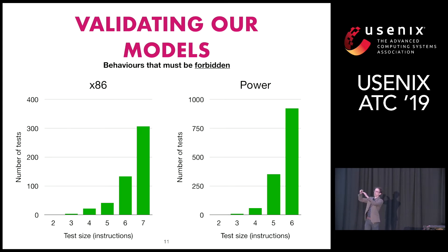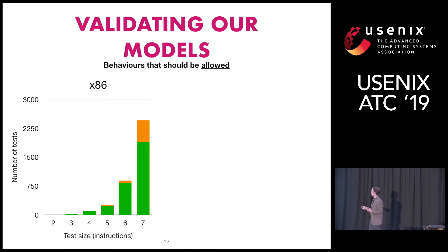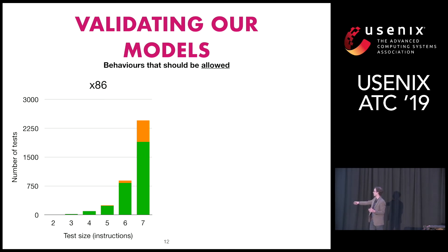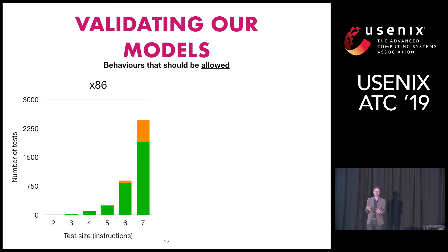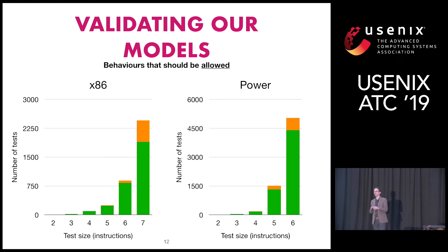We also asked the constraint solver for executions just on the allowed side of the boundary. Here you want to observe as many of those behaviours as possible, and we saw most of them. The orange ones are behaviours the model allows but we couldn't actually see — which might mean our model is a little too weak, or that the machine was conservative and didn't implement every detail the architecture permitted, or we simply didn't run enough tests. We came reasonably close in both cases, so our models probably aren't ridiculously weak.